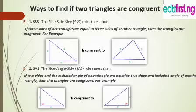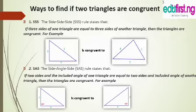The first one is SSS, that is the side-side-side. The side-side-side rule states that if three sides of one triangle equal the three sides of another triangle, then the two triangles are congruent. For example, you can see here the side of length 3 equals the side of length 3 in the other triangle, the side of length 4 equals the side of length 4, and the side of length 5 equals the side of length 5. So these two triangles are congruent by the SSS postulate.